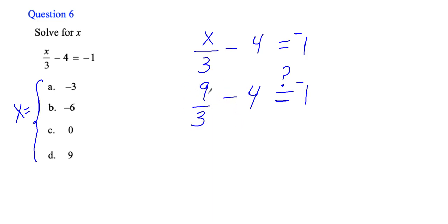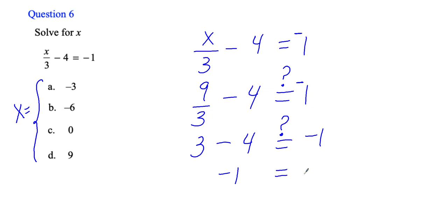9 divided by 3 is 3. Bring down minus 4. Does 3 minus 4 equal negative 1? Think of temperature: it's 3 degrees, it goes down 4 degrees — the new temperature is negative 1. Yes, negative 1 equals negative 1. So when I plugged in 9 I got a true statement. D is my answer and I'm finished. Make sure you understand that 3 minus 4 gives us negative 1.